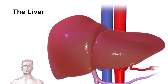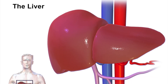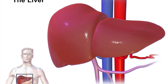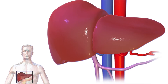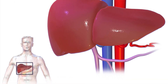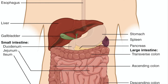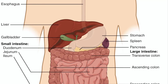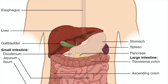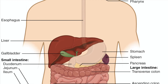I'm Sark and in this video we are looking at the liver and the role of the liver. The liver is your largest internal organ and it's located in the upper right portion of your abdomen. It is a large reddish brown organ that carries out many different functions in your body.